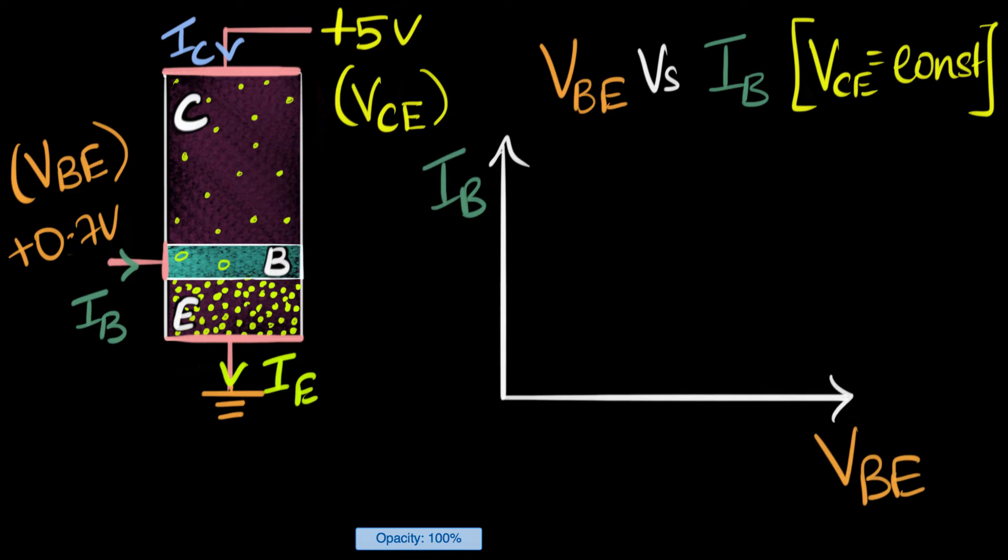So we have VBE versus IB. What does that graph look like? Well, notice that this graph is actually the graph of a PN junction under forward bias, right? That's all that graph is going to be. It's a forward bias graph.